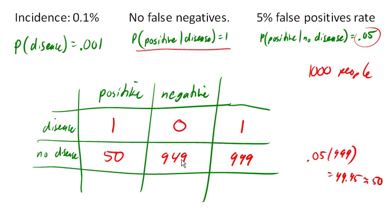So that leaves us 51 people testing positive for the disease. Now remember, what we're really interested in is what is the probability that you have the disease given that you tested positive? Well, now we have enough information to figure that out.